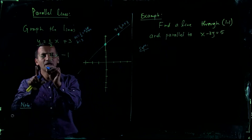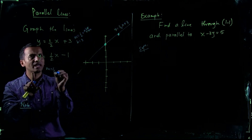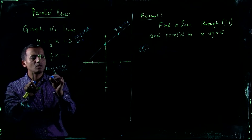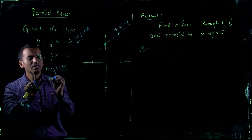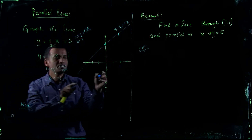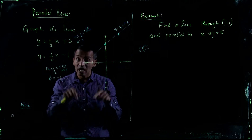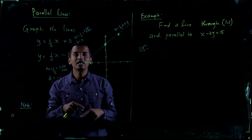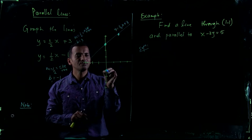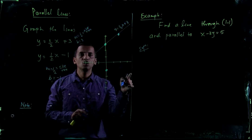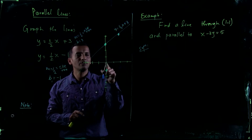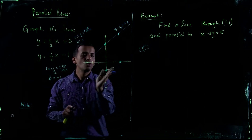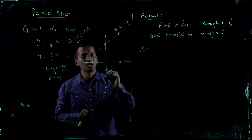In the second case, m is one-half again — rise over run. The y-intercept b is negative 1, so it starts from negative 1. You can always think of b as the starting value on the y-axis. Again, rise is 1 unit and run is 2 units. You can do rise then run, or run then rise — it's the same thing, you will get the same graph.